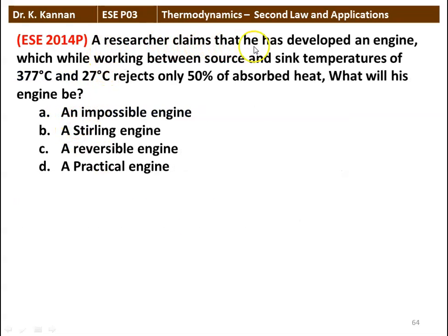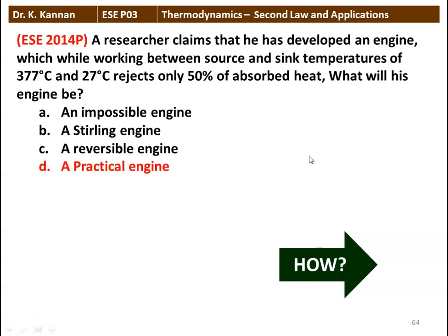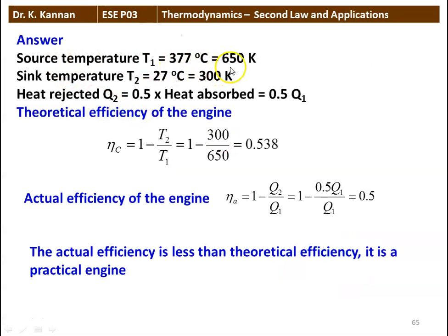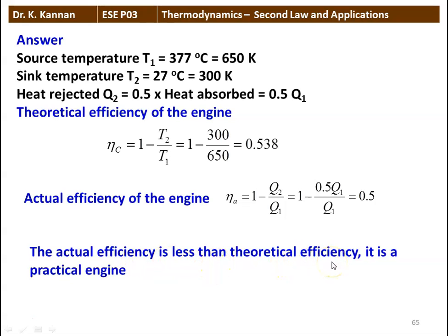Next question: A researcher claims he has developed an engine working between source and sink temperatures of 377°C and 27°C that rejects only 50% of absorbed heat. What type of engine is it: impossible, sterling, reversible, or practical? The answer is a practical engine. The source temperature is 377°C = 650 K; sink is 27°C = 300 K. The Carnot (theoretical) efficiency = 1 − 300/650 = 0.538. The actual efficiency = 1 − Q2/Q1 = 1 − 0.5 = 0.5. Since actual efficiency is less than the theoretical Carnot efficiency, it is a practical engine.